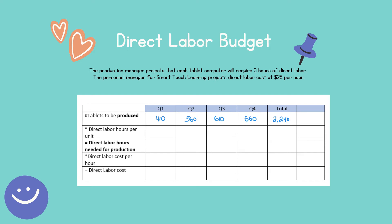Now I need to multiply the production quantities by direct labor hours per unit — that is, how many hours are needed to make one unit — to get the total direct labor hours needed for production. The production manager projects that each tablet computer will require three hours of direct labor, so I multiply by three hours.